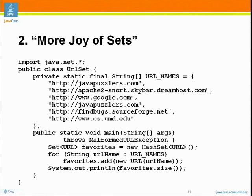We've got an array initialized to contain six different strings: Java Puzzlers, Apache 2, Snort, Sky Bar, Google Java Puzzlers — which is a repeat of the first one — FindBugs website, and the University of Maryland website. In main, we create a Set of URLs, initialize it with a HashSet. Then we go through all of these URL names which are strings, and for each string we create a URL object and add it to the set. Then at the end, we print out the size of the favorites.